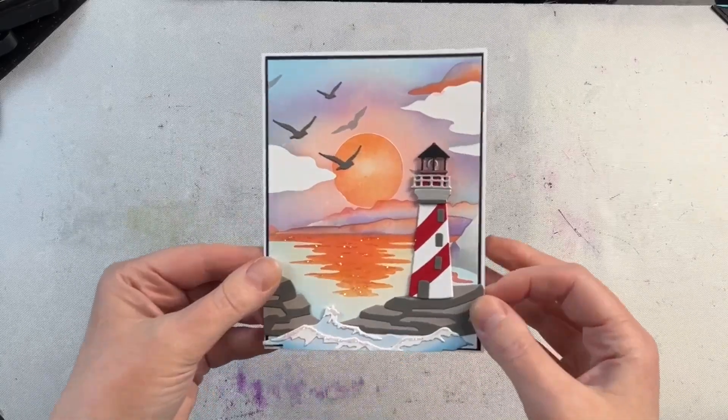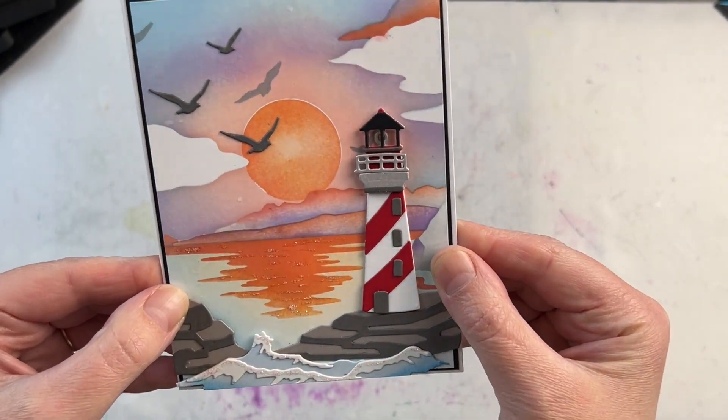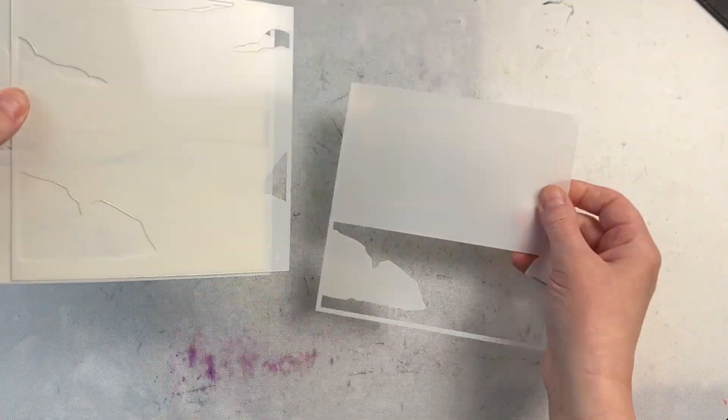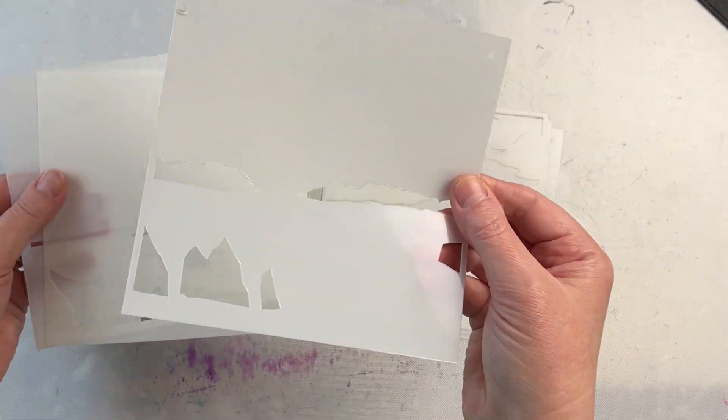And my last one I created a sunset. I used a circle punch to create a mask and created the sun back there. So you can get really creative with this stencil and create lots of different backgrounds with many, many different color combinations.